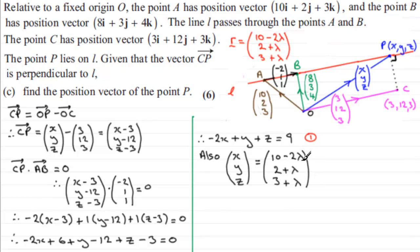Now, if I just simplify that, what we've got is minus 2X plus Y plus Z. And then, I've got 6 minus 12, which is minus 6, minus another 3 is minus 9. So, if I add 9 to both sides, I'm going to have minus 2X plus Y plus Z equals 9. So, I've got three unknowns, X, Y, and Z. So, I need three equations. I'm going to call that equation 1.